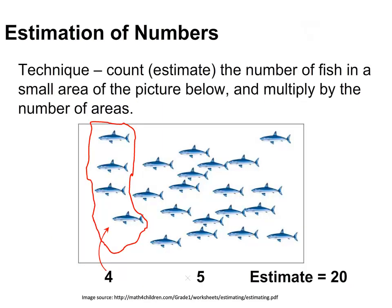To estimate the number of objects in a group, estimate the number in a small portion of the group, then estimate the number of portions and multiply. In this picture of a number of fish, there are 4 fish in the column on the left, and the estimate is that there are about 5 such columns, making an estimate of the total of around 20.